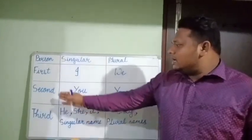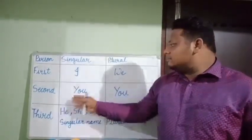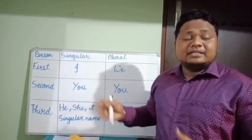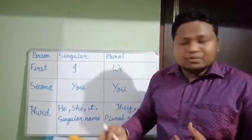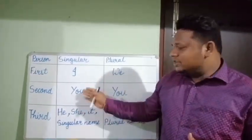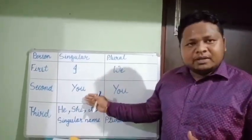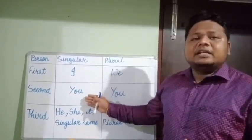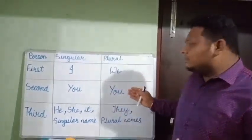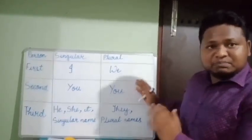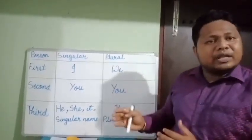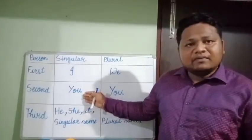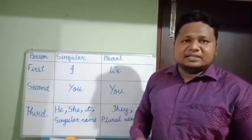The second person is 'you' — singular 'you' means the one who listens to the first person. The plural form is also 'you,' but in the plural form more than one person is listening, whereas in the singular form only one person is listening.